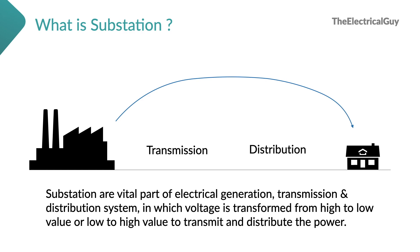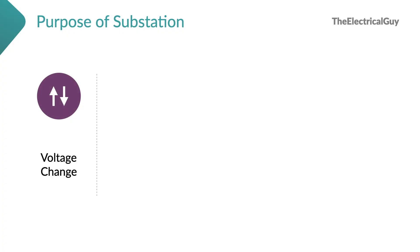Now we will see the different purposes of a substation. The first and most important purpose is voltage change. During the transmission phase we have to transform voltage to a very high level, and when it comes to the distribution phase we have to step it down. That purpose is satisfied by using a substation.